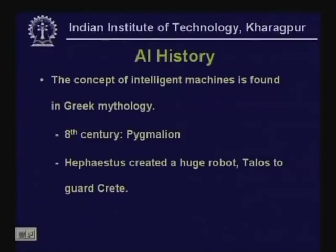In ancient Greece, Pygmalion in the 8th century is credited with obtaining an ivory statue of a woman fashioned after the manner he liked. Hephaestus created a huge robot called Talos to guard Crete, going around the island hurling stones at invaders and squeezing opponents to death.